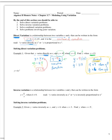We can also vary directly with powers of x. This would be read as 'y varies directly as x to the nth power,' meaning you can raise x to a power in the variation equation.